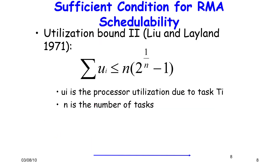The sufficient condition — there is a Liu and Layland bound linked on the course website — was the first to provide a sufficient case for RMA. I will use the terms RMA and RMS interchangeably; they mean exactly the same thing.